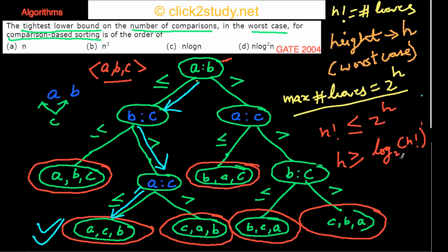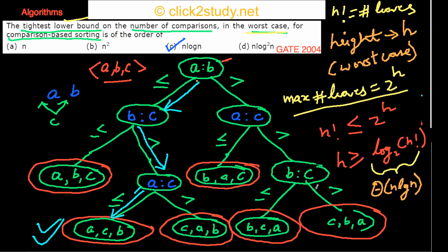This height h represents the number of comparisons in the worst case. Since h ≥ log₂(n!), we have our lower bound. We have proven in another video that log₂(n!) is in Θ(n log n), and so the tightest lower bound on the number of comparisons for comparison-based sorting is Θ(n log n).